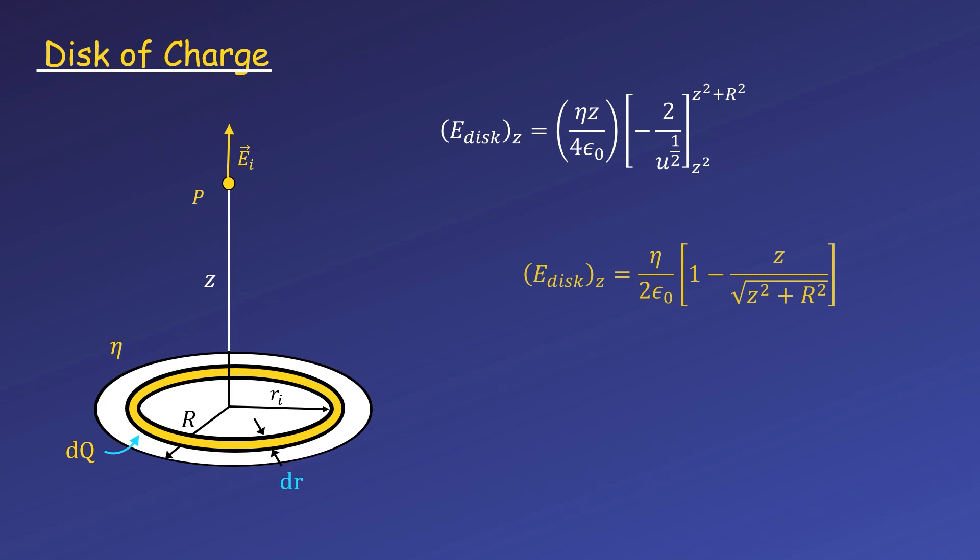Now we evaluate at our limits. Our 2 over 4 reduces to a half, and since we have a minus sign, we can swap our limits to make the signs easier to handle. The square root of z² becomes z and cancels with our z from before, leaving us 1 for the first term. Then we plug in our limit z² plus R², and we still have a z on top. This is our final expression for the electric field of a disk.